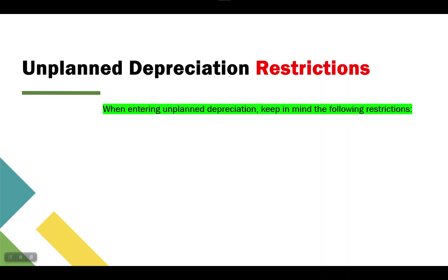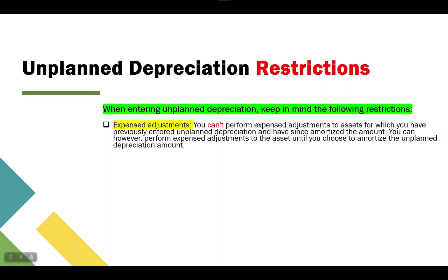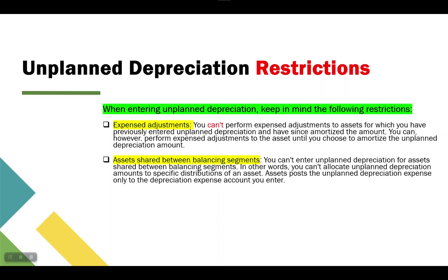There are restrictions for unplanned depreciation. First, expense adjustment: you cannot perform an expense adjustment to assets for which you have previously entered unplanned depreciation and already amortized the amount. You can, however, perform an expense adjustment until you choose to amortize the unplanned depreciation amount. Second, assets shared between balancing segments: you cannot enter unplanned depreciation for assets shared between balancing segments, as it posts only to the depreciation expense account you enter.